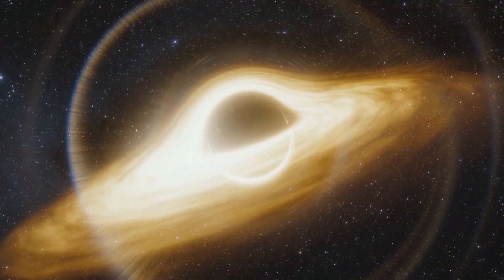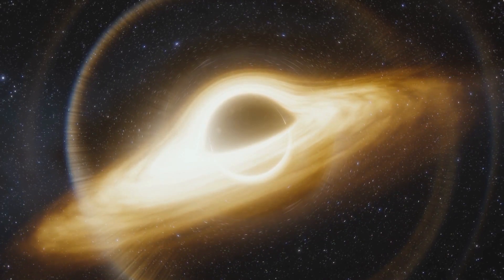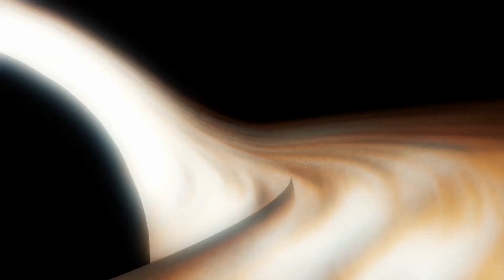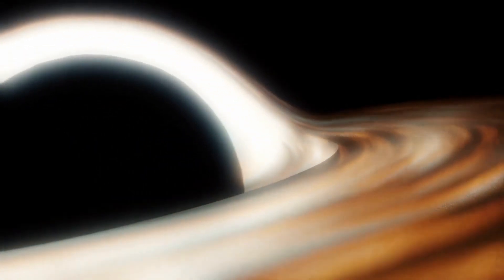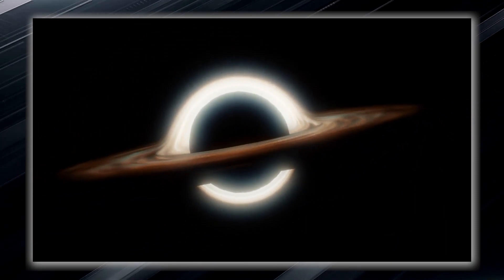This is where things become truly extraordinary. The gravitational pull near a black hole is so incredibly strong that it creates what is known as an event horizon. The event horizon is not a physical barrier, but rather a region where space gradually bends. It is an invisible boundary or point of no return.